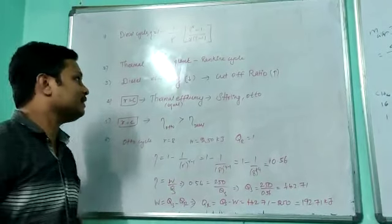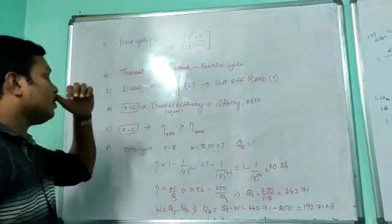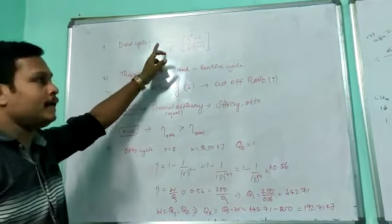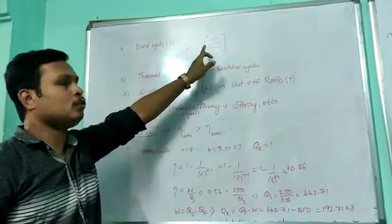My friends, today we have thermal engineering and this concept. First we get diesel cycle efficiency. Diesel cycle efficiency is equal to 1 minus 1 by R to the power gamma minus 1 into Rho to the power gamma minus 1 divided by gamma into Rho minus 1.